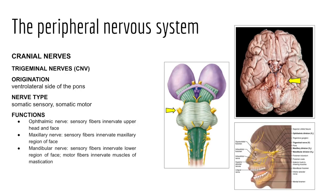Cranial nerve five is the trigeminal nerve, the largest set of cranial nerves. Its fibers extend from the ventrolateral pons and branch into three divisions: the ophthalmic nerve passing through the superior orbital fissure, the maxillary nerve through the foramen rotundum, and the mandibular nerve through the foramen ovale. The trigeminal nerve is a mixed nerve, conducting sensory impulses from various areas of the face and supplying motor fibers for mastication.